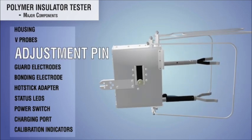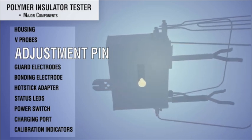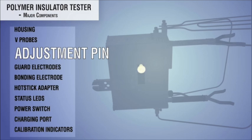V-probe spacing adjustment pin: V-probe spacing can be mechanically adjusted to match the insulator shed spacing. The adjustment mechanism is indexed to ensure locking.